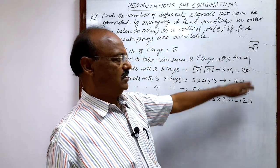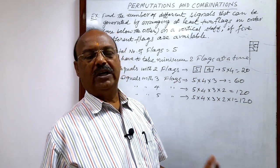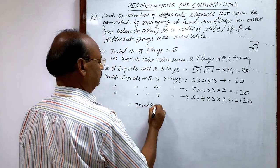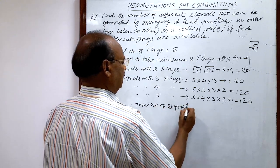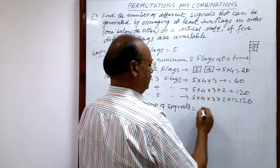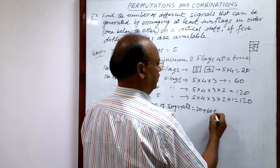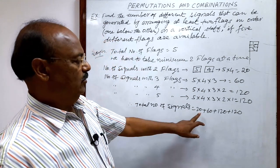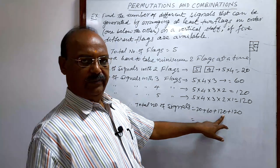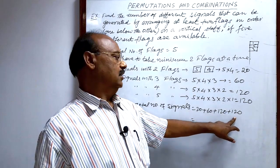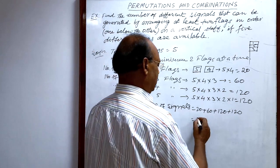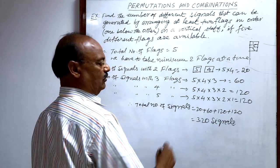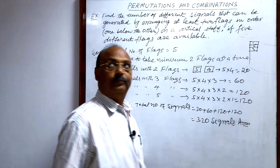If we add all these numbers, we get the total number of signals formed using the flags. Therefore, the total number of signals = 20 + 60 + 120 + 120. Adding: 20 + 60 = 80, plus 120 = 200, plus 120 = 320. So the total number of signals is 320. This is the answer.